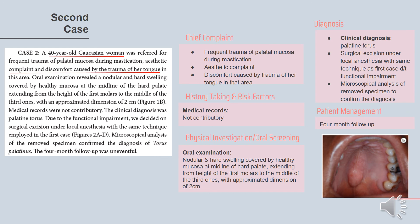The 40-year-old woman had trauma of palatal mucosa during mastication with aesthetic complaints and tongue discomfort. Oral examination revealed a nodular hard swelling covered by healthy mucosa at the midline of the hard palate, extending from the first molars to the middle of the third molars, with an approximate dimension of 2 cm. Medical records were not contributory, and the clinical diagnosis was palatin torus. Surgical excision under local anesthesia using the same technique as the first case was performed. Microscopical analysis confirmed the diagnosis of torus palatinus, and the four-month follow-up was uneventful.